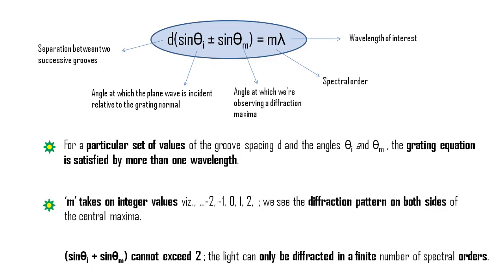The spectral order m can take on integer values which tells us why we can see the diffraction pattern on both sides of the central bright.